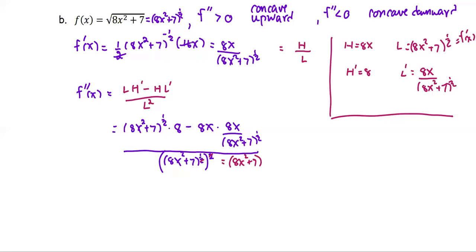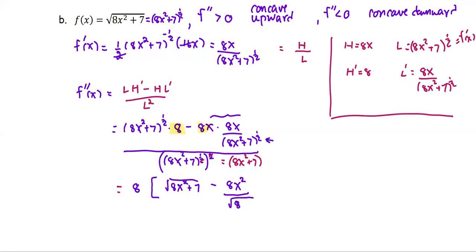In the numerator, we have a common factor of 8, so we factor the 8 out. The power 1 half is the same as the square root, so we have square root of x squared plus 7, subtracted by 8 times x squared over the square root form of 8x squared plus 7. When we divide, it's the same as multiplying by the reciprocal, so bring it to join the front term as the denominator.